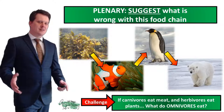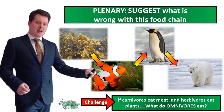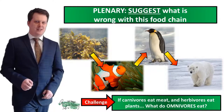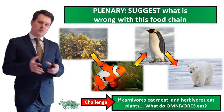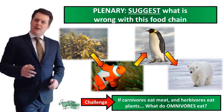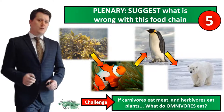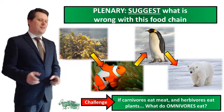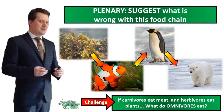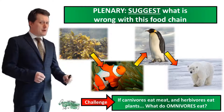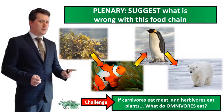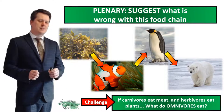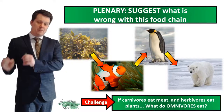For our final task: this food chain — seaweed → clownfish → penguin → polar bear — contains an error. The organisms live in different habitats; penguins and polar bears live on opposite ends of the earth and would never meet. For a challenge: if carnivores eat meat and herbivores eat plants, what do omnivores eat? Omnivores consume both producers and other consumers — they eat both plants and animals.